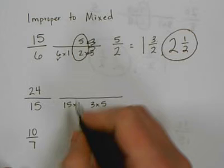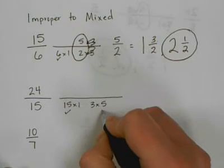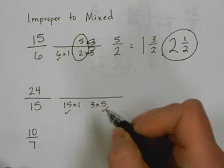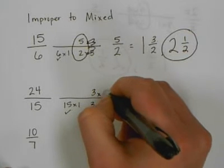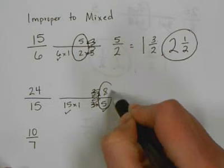Now I start with the biggest number. Does anything times 15 give me 24? No. Does anything times 5 give me 24? No. Does anything times 3 give me 24? Yes. 3 times 8. Then we lose what's the same, keep what's different. 8 fifths.